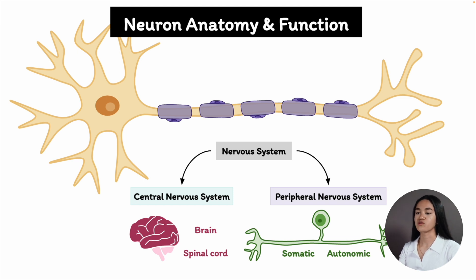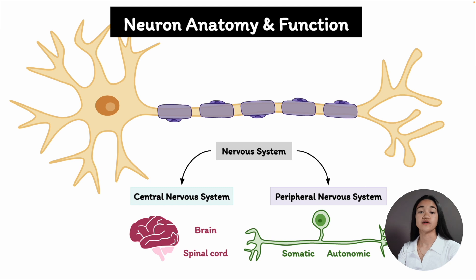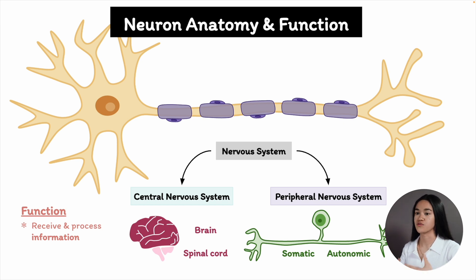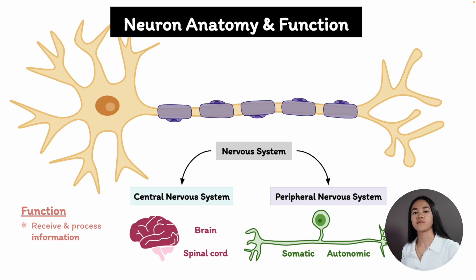The basic structural and functional unit of the nervous system is the nerve cell, or neuron. The other major cell types of the nervous system are the glial cells, which we'll cover in another lecture. A neuron's function is to receive and integrate information from other neurons and sensory receptors, as well as to communicate information to other neurons. Their job is to send electrical signals from one area of the cell to another part of the same cell or nearby cells.